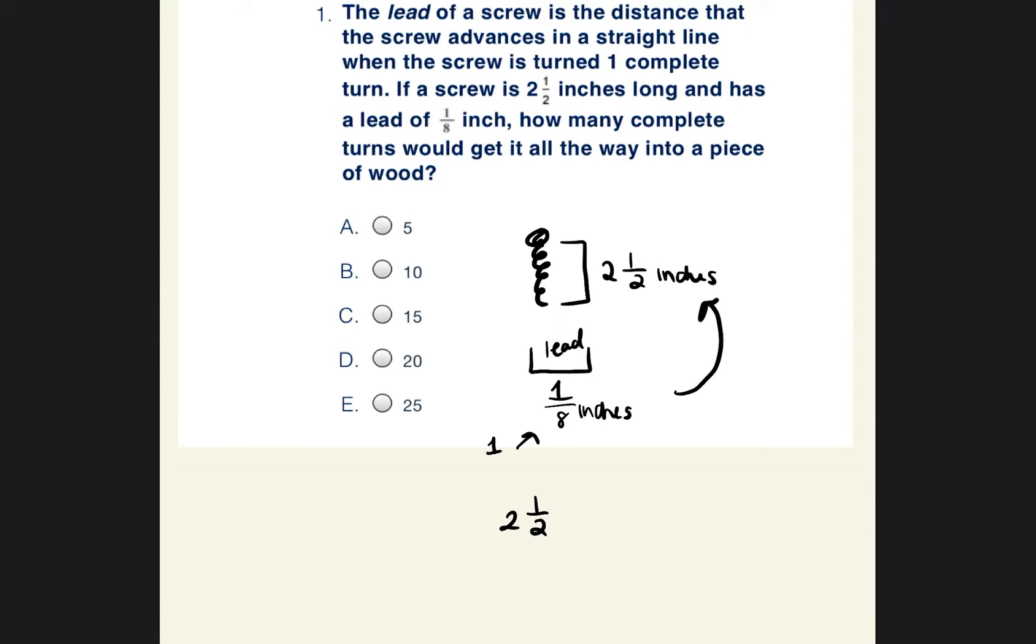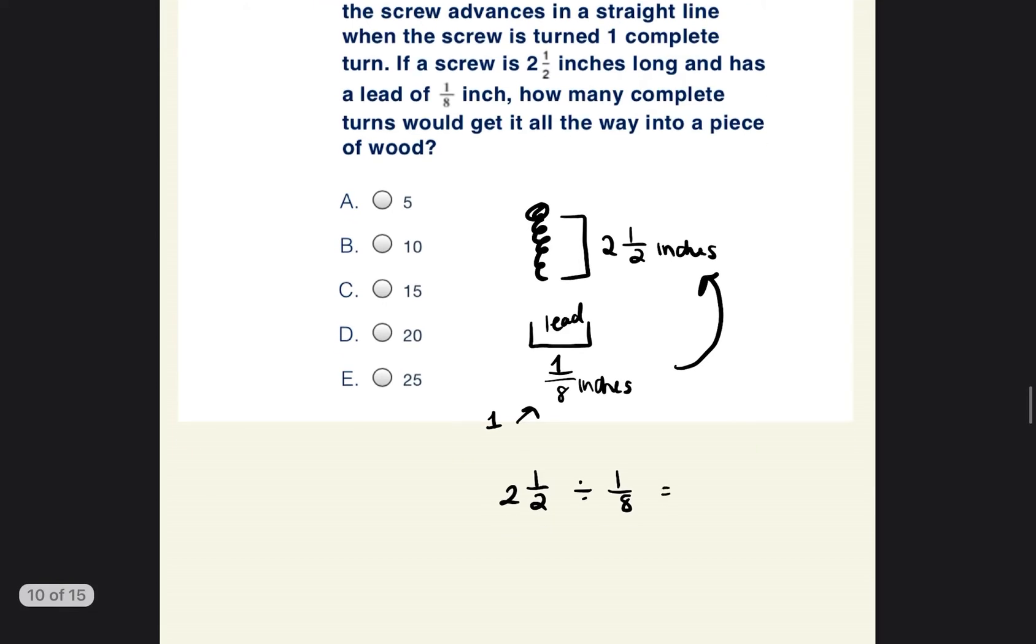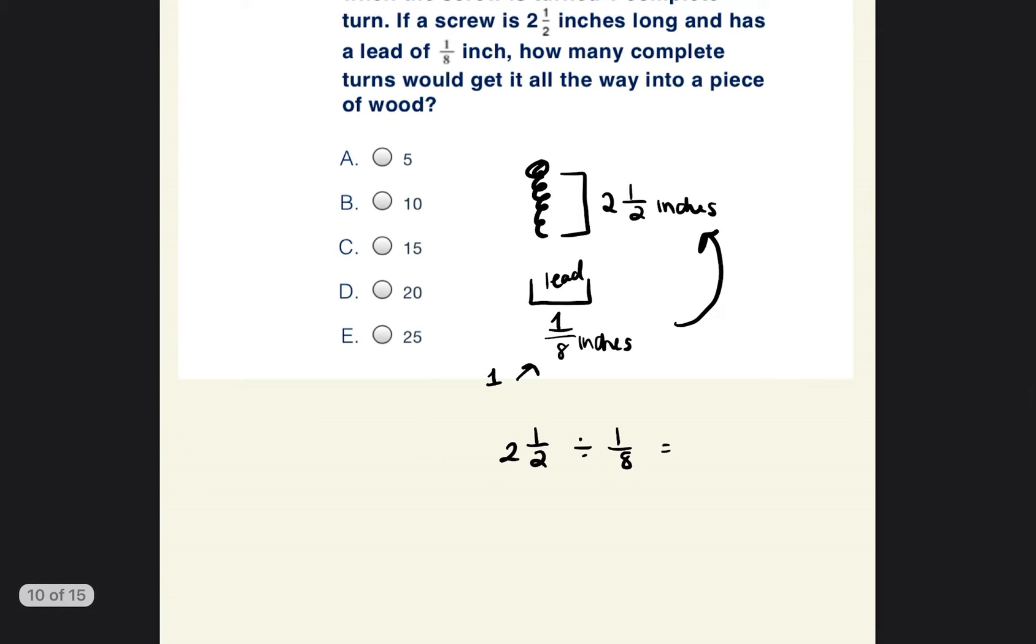So we're going to have to do two and a half divided by one eighth and see what that's equal to. So the first step is to change this from a mixed number into an improper fraction. The way we do that is you multiply two times two, which is four, and then you add the top number one, so it's five. And then you keep the denominator the same, which is two.